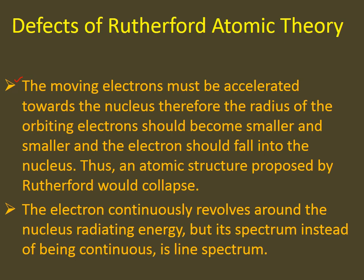The electron continuously revolves around the nucleus, so they are radiating energy continuously. But the spectrum, instead of being continuous, shows a line spectrum. In this way, the revolving of the electrons around the nucleus is still unexplained, and that was explained by Bohr's atomic theory.